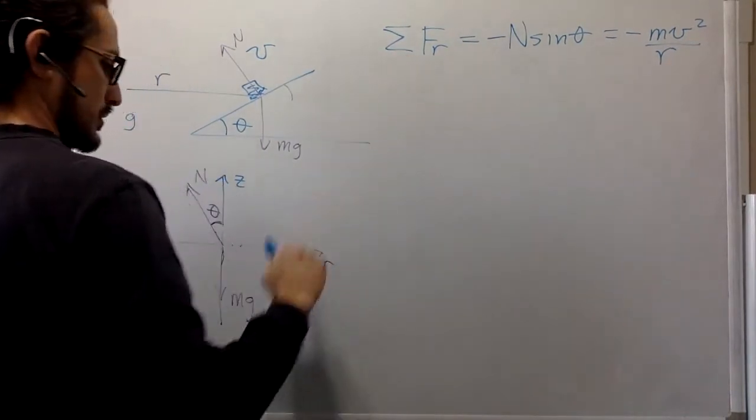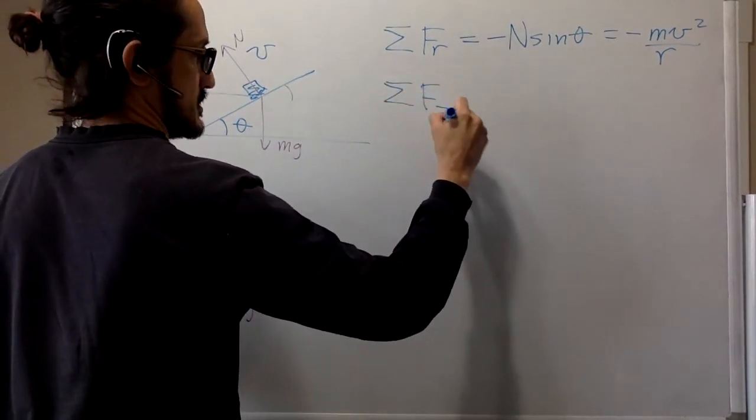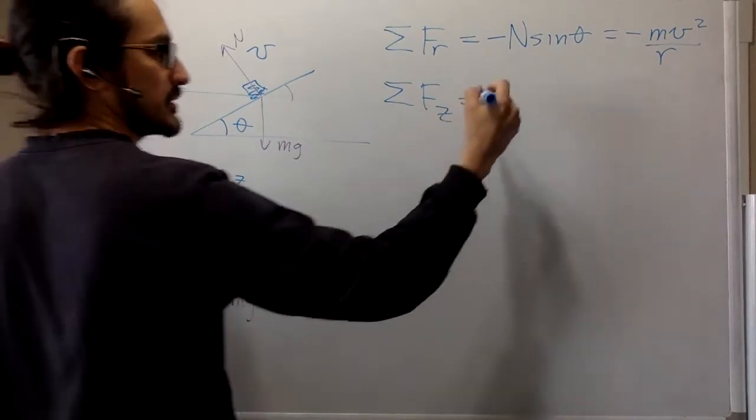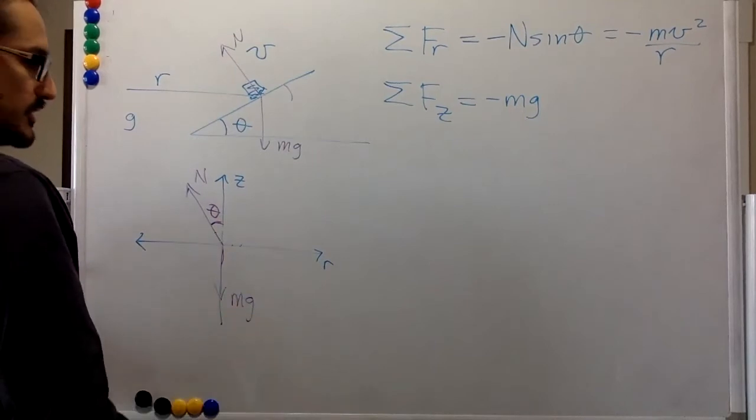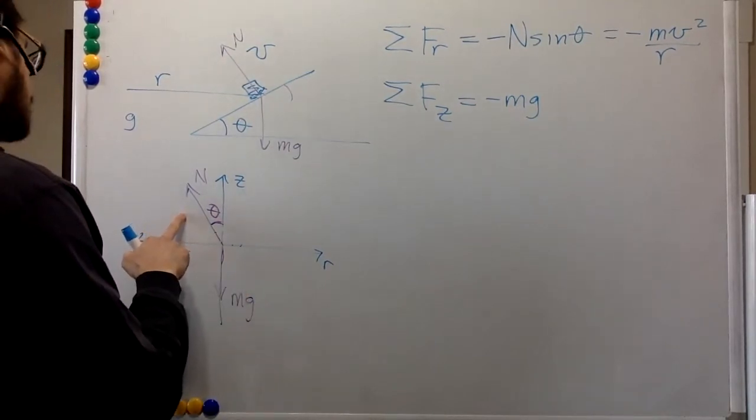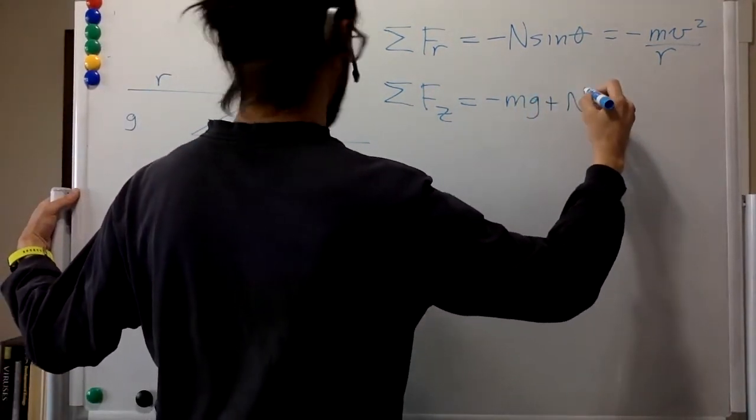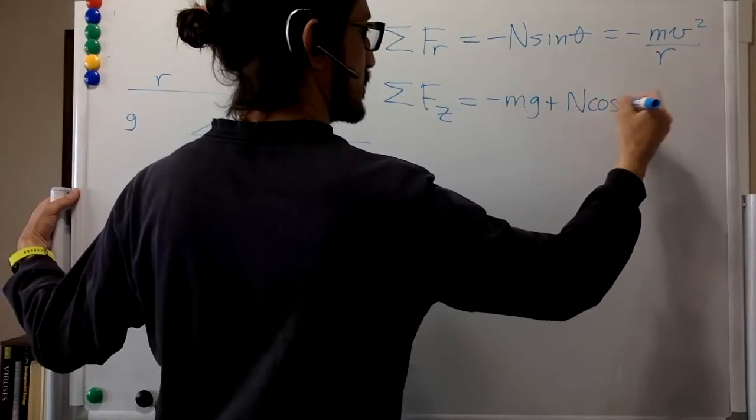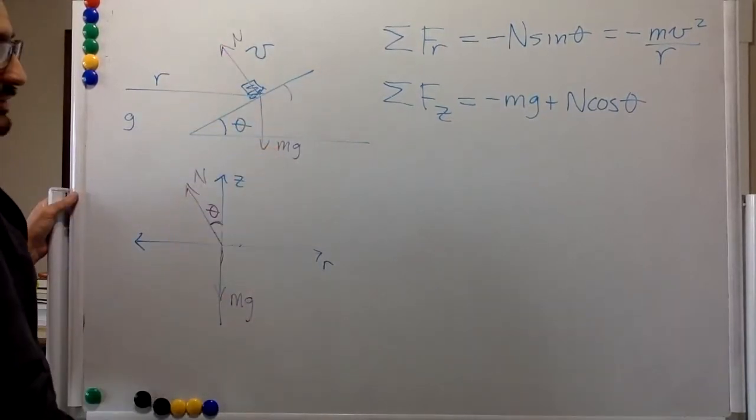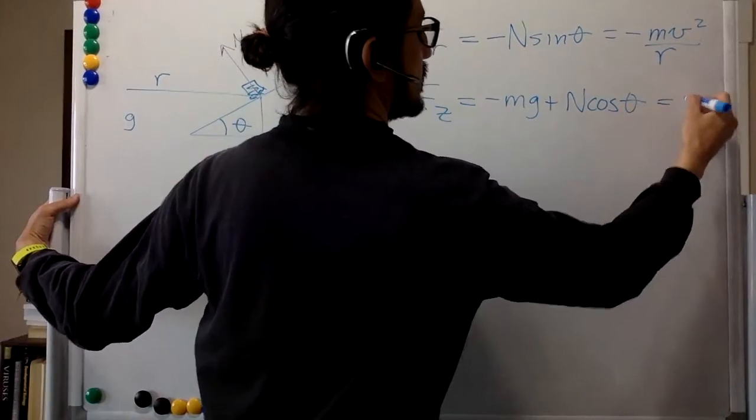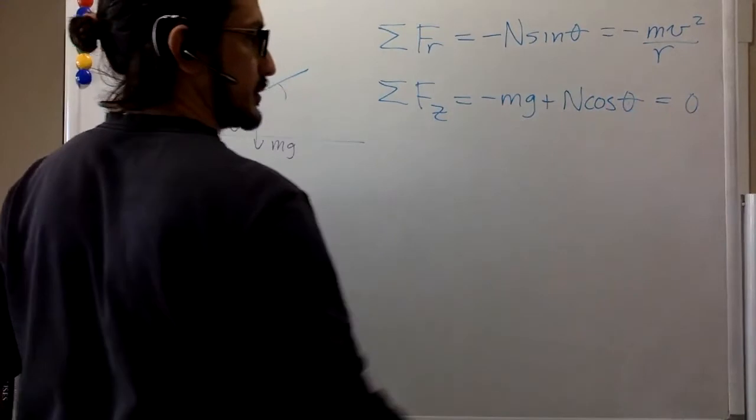And for the z direction, we have negative mg, and all of it is in the z direction. And then it's going to be the cosine of this one, so plus N cosine of theta. And we don't want this thing to be moving up or down in the z direction, or the engineer doesn't want that, so this is equal to zero.